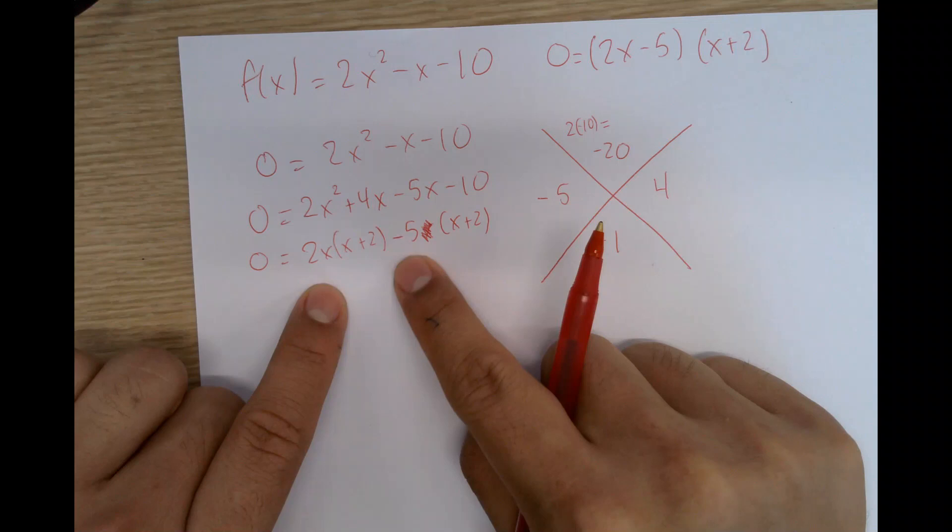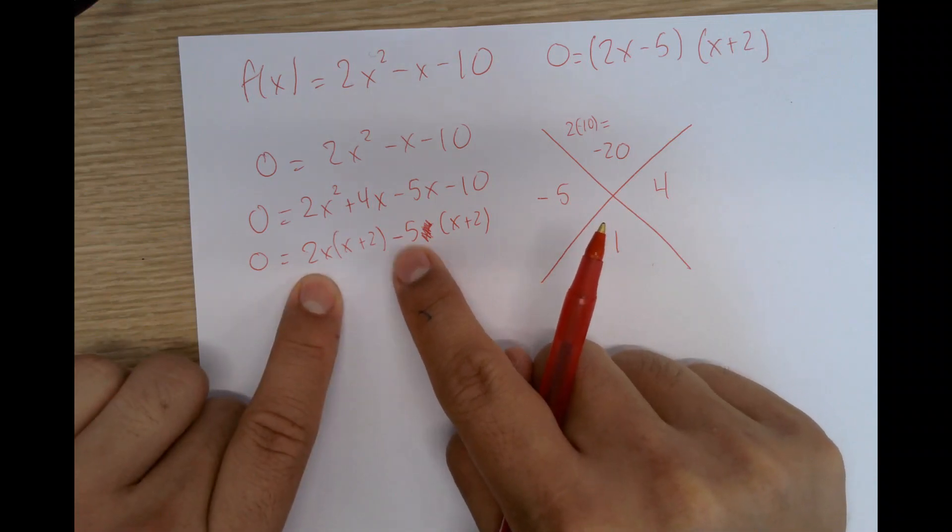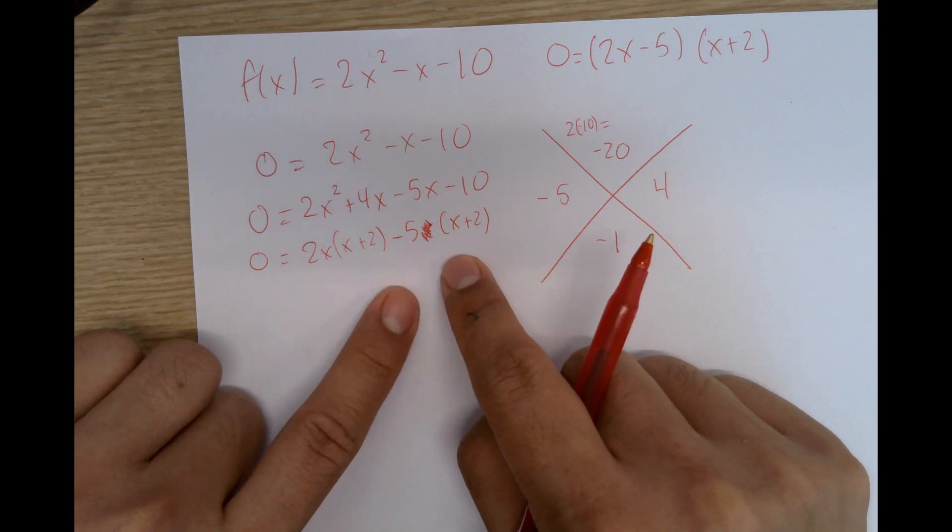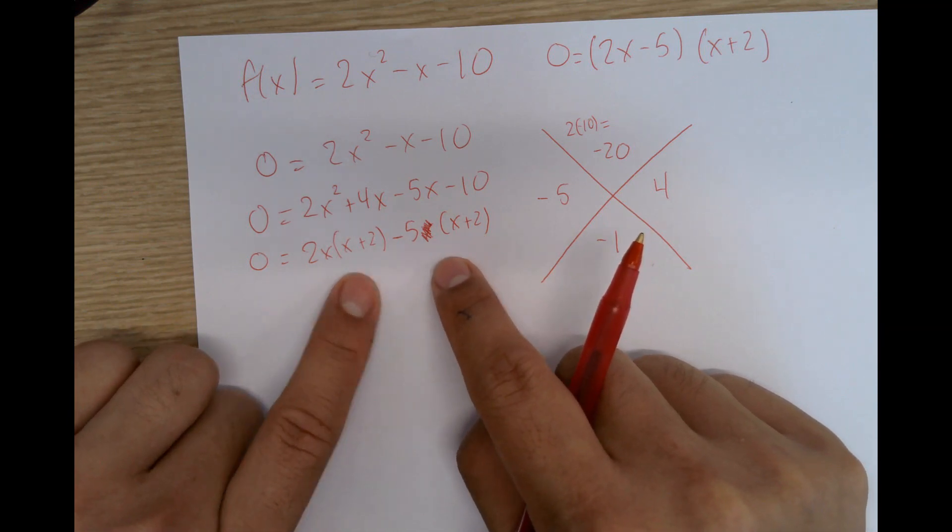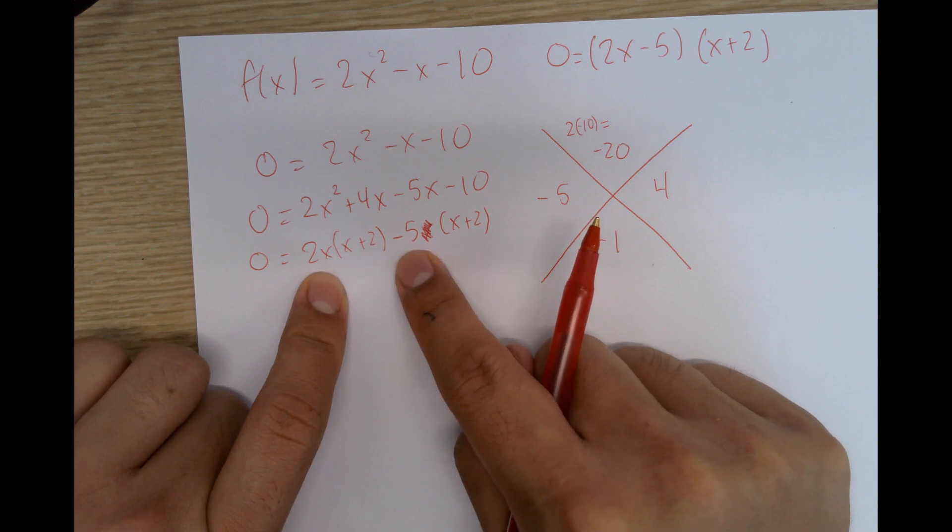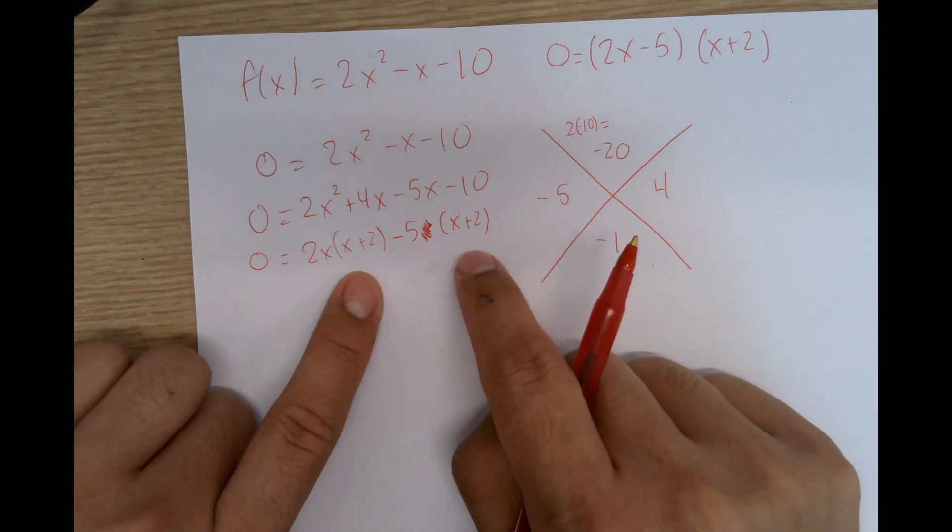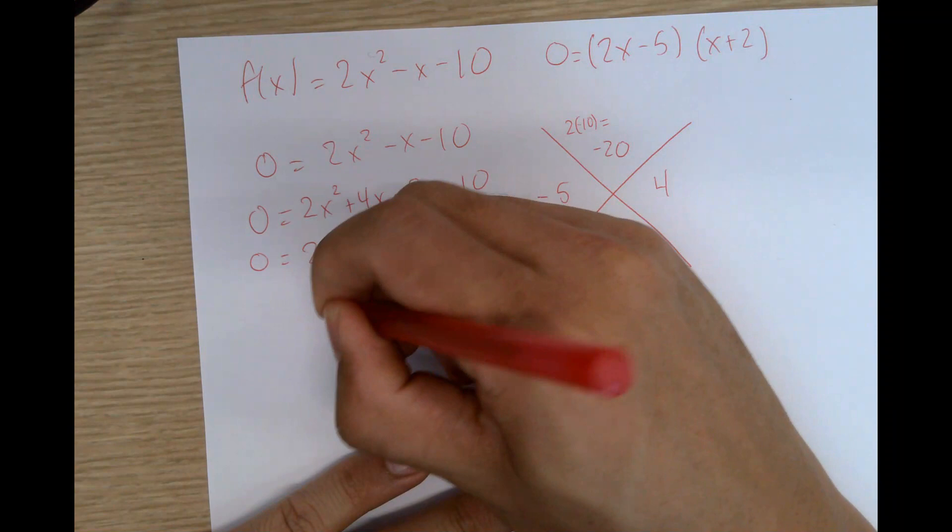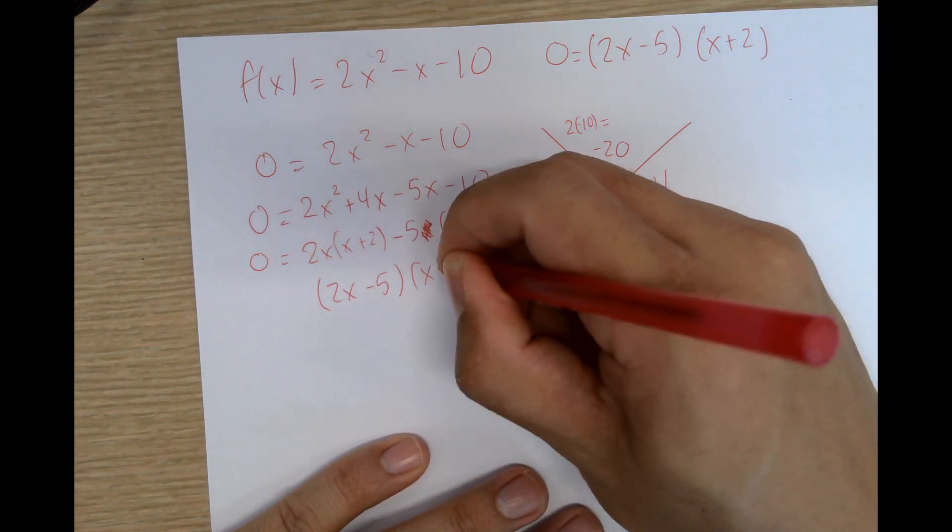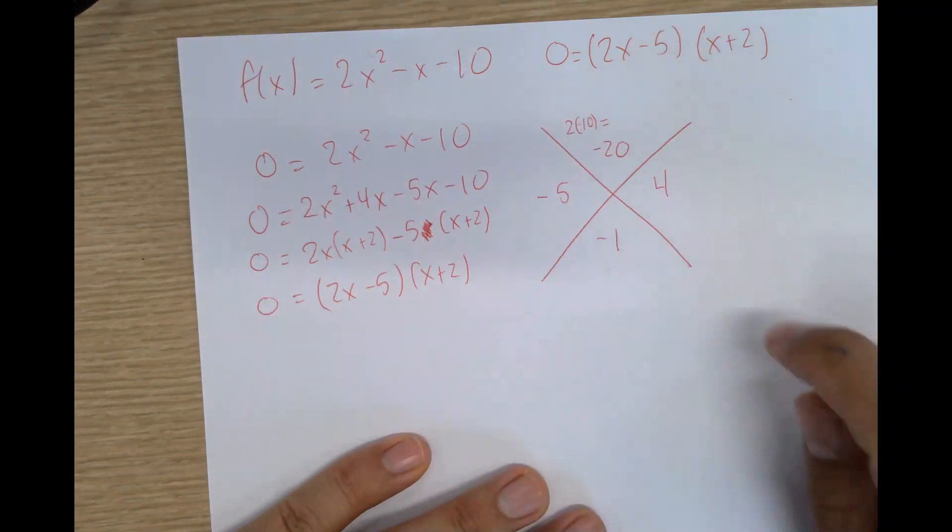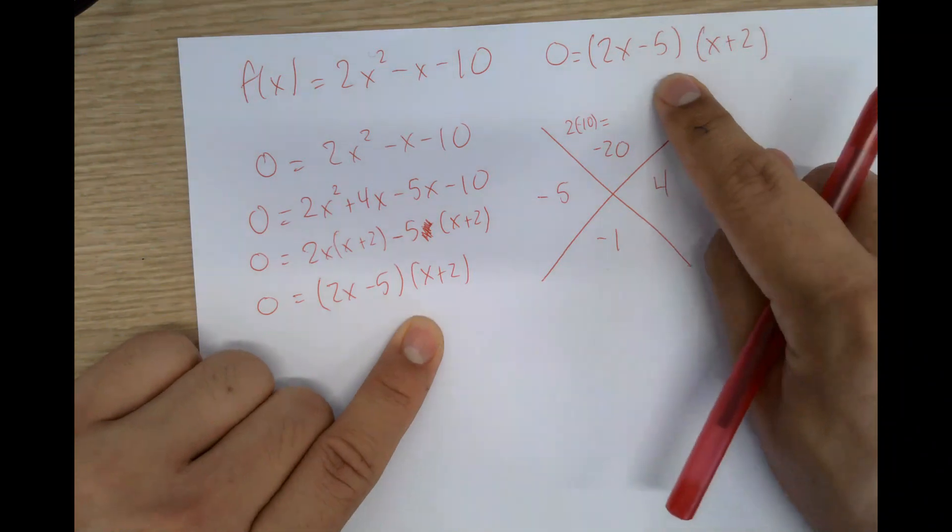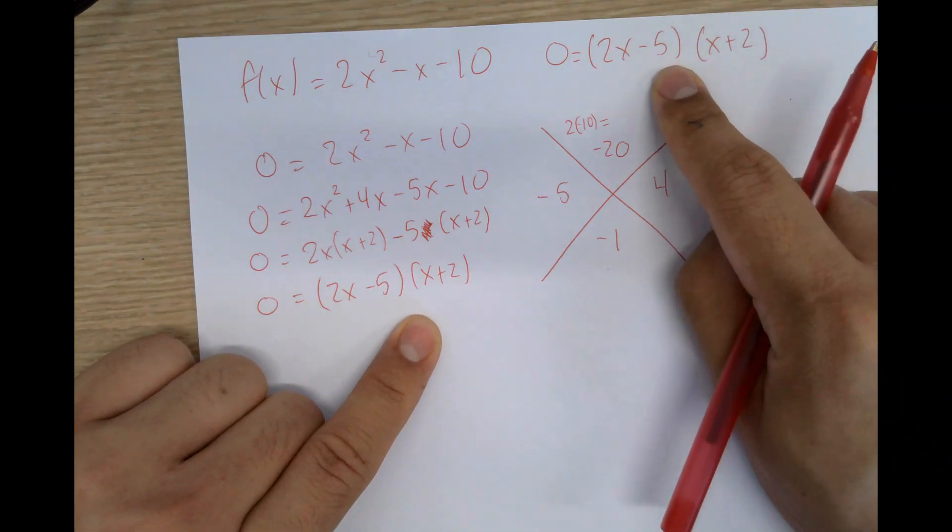So the next thing is that we can combine the 2x and -5 because both of them are multiplying the same thing. Because they are multiplying the same thing, we can combine it as 2x minus 5 times x plus 2 equals 0. So if this looks familiar, it should because if you look at how we solved it before, we actually have the same factors.